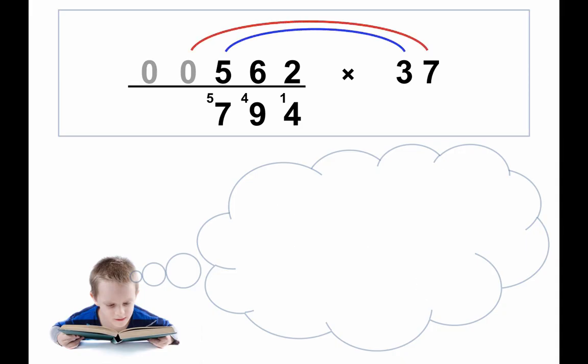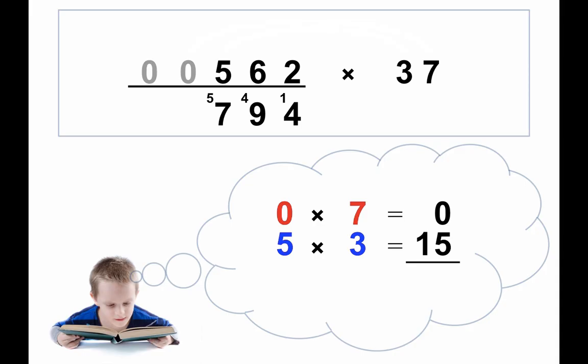Go on to the next step. 7 times 0 is 0. 3 times 5 is 15. We have to add the 5 from the carry, so we have 20. So we write down the 0 and carry the 2.